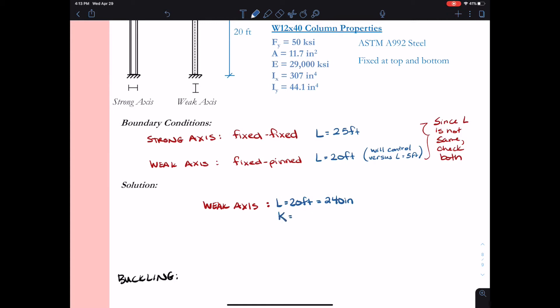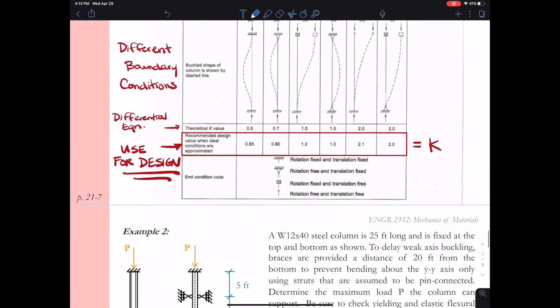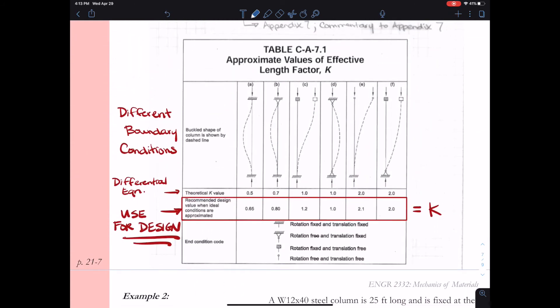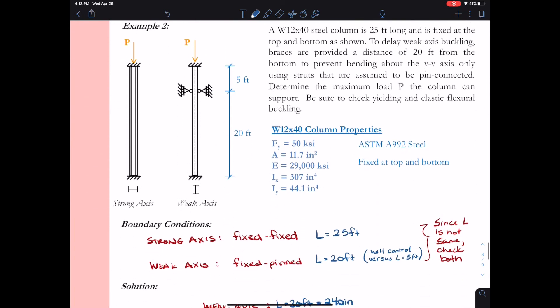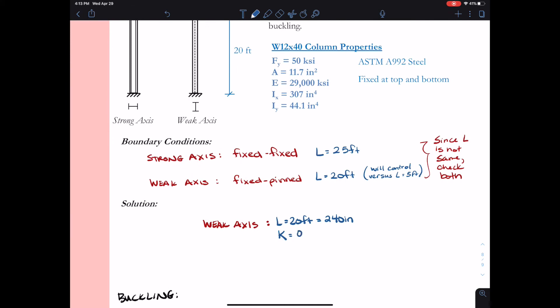I need to come up with my effective length factor, K. So I need to go back to that table on the previous page. I see that for a fixed pinned condition, I have case B like we had in example 1. Case B, they recommend for design to use a value of K equal to 0.80. So I will use a value here again of 0.80. Lastly, when I look at i, I want to use my weak axis moment of inertia. From the given properties, my weak axis moment of inertia is 44.1 inches to the fourth.